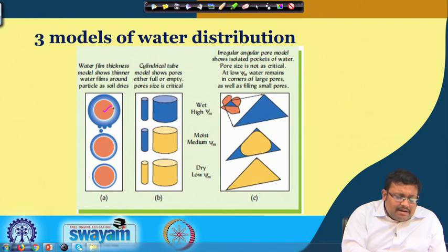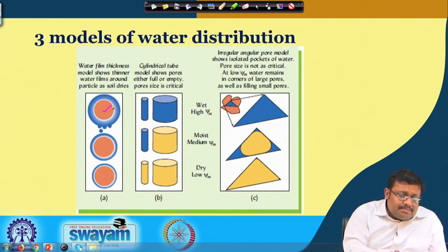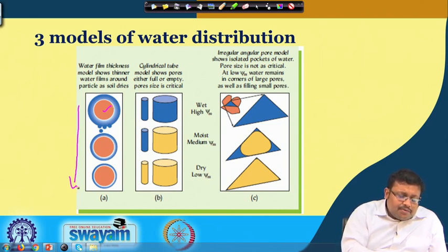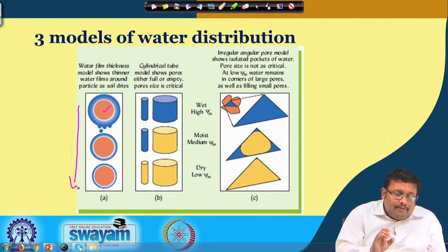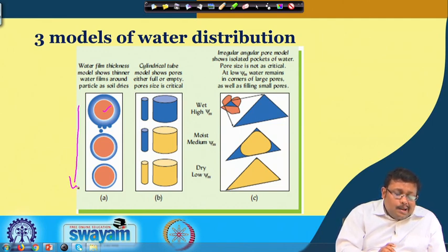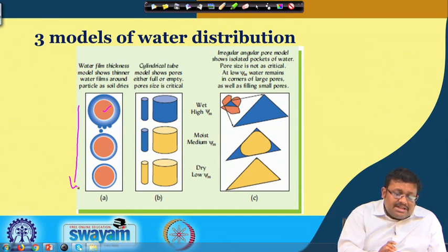You see three different particles and the thickness of the water films is continuously going down as you move from the first one to the second one to the third one. As the thickness of the water films around the particles decreases, their potential energy is also decreasing.